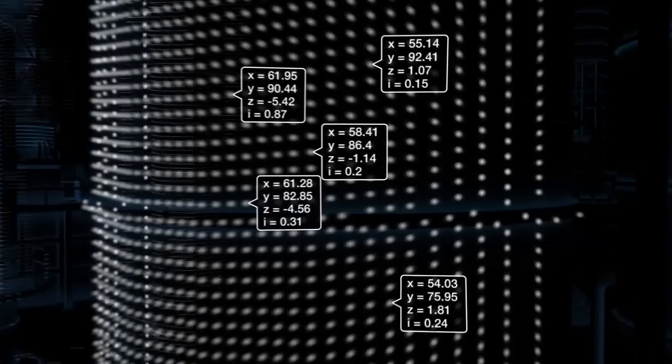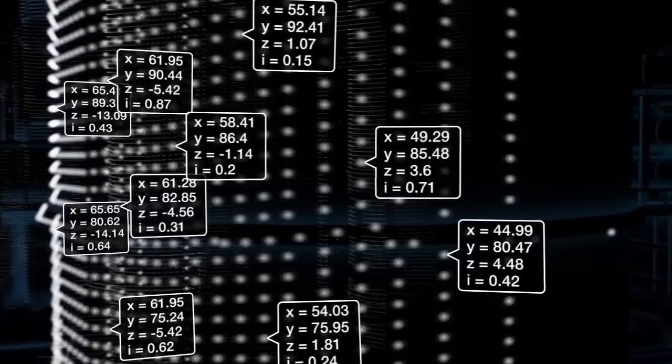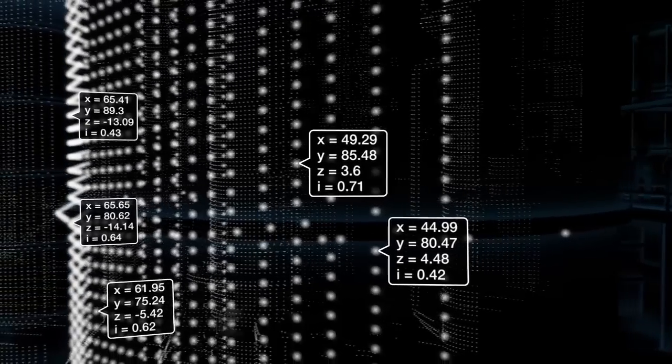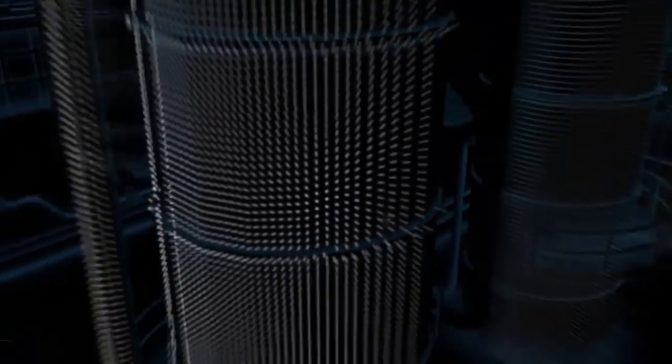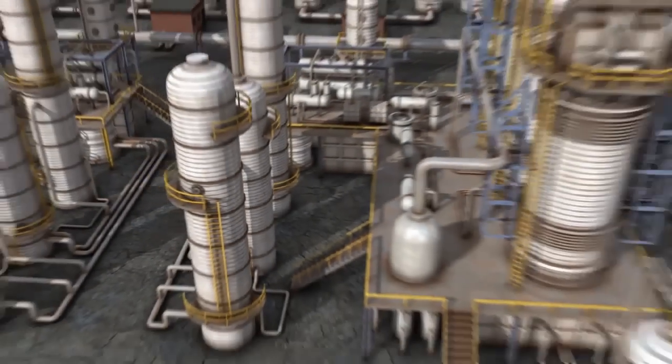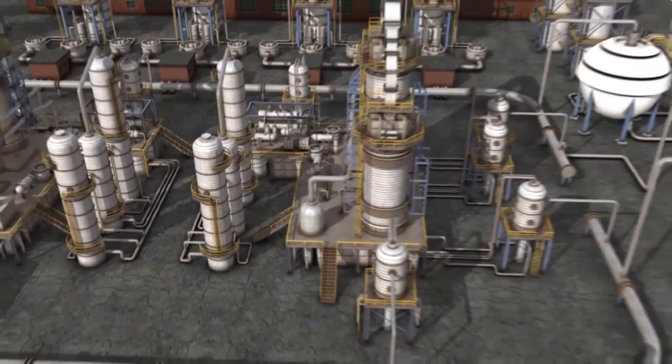Each one of these pixels that you see on the screen is an XYZ coordinate with an intensity value. The data captured by a 3D laser scanner can then be brought to the desktop of the user or designer.